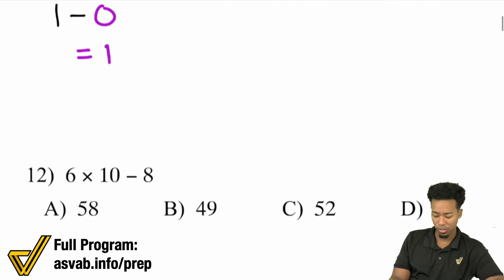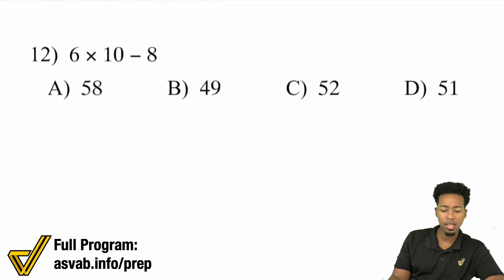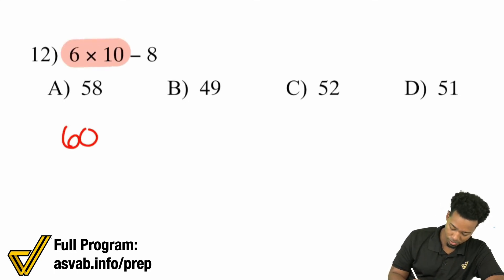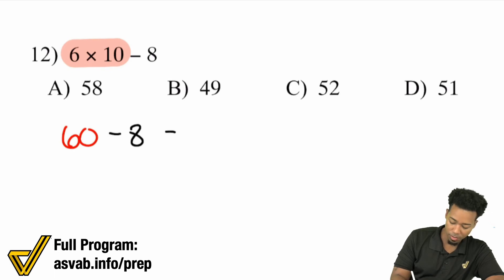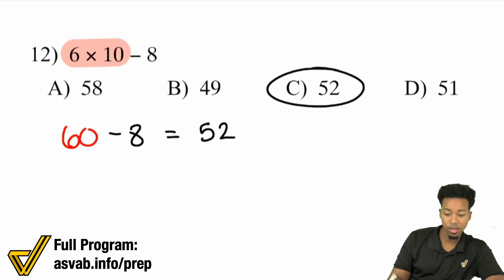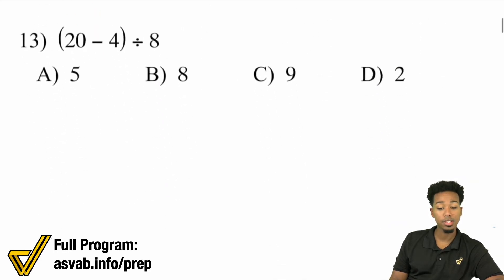Knowing your order of operations is really going to spell success. 6 times 10 minus 8. We'll do 6 times 10 — that's going to give me 60. And 60 minus 8 is going to give me 52. Nice and straightforward.